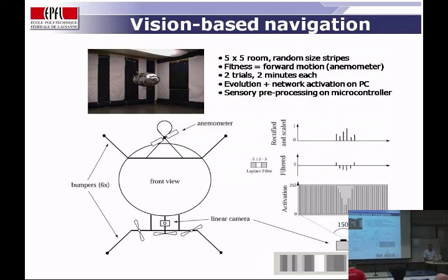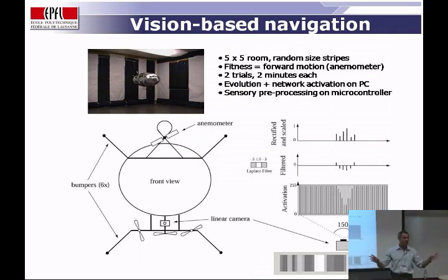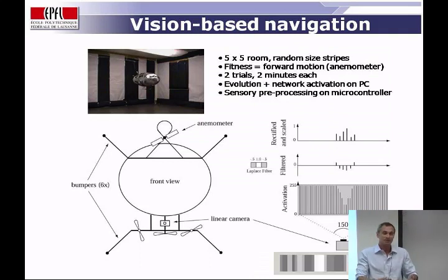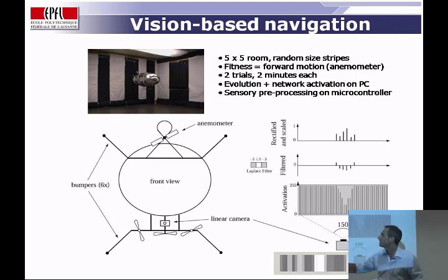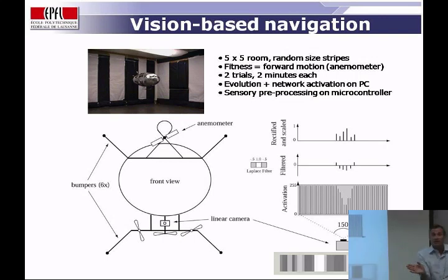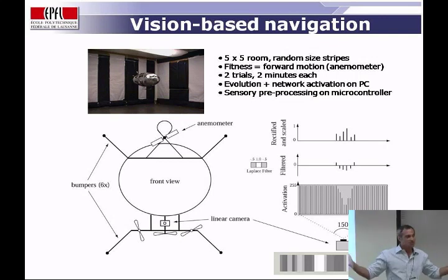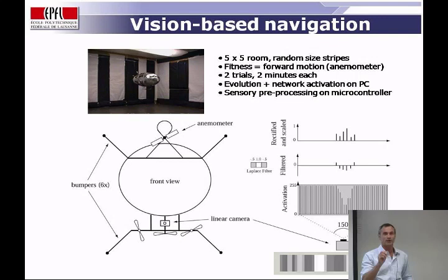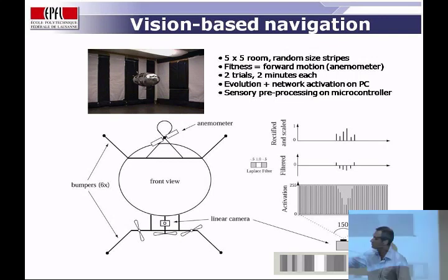We then asked whether we could evolve a control system for a robot with more complex dynamics than a wheeled robot. We took a small blimp — a Zeppelin — equipped with the same type of linear cameras in the front, but with lenses changed from 36 degrees to 150 degrees field of view, which you need if you have a large body with complex dynamics. The evolution ran on a microcontroller on the robot itself, with a student changing batteries every four hours.